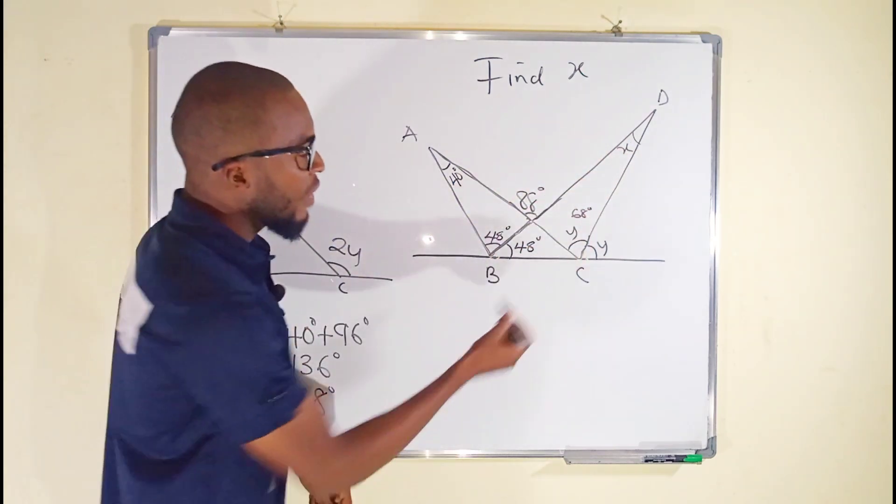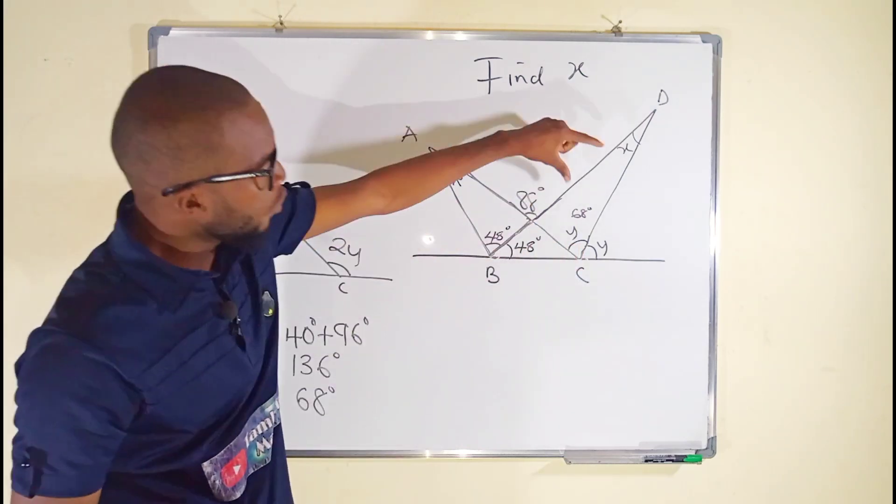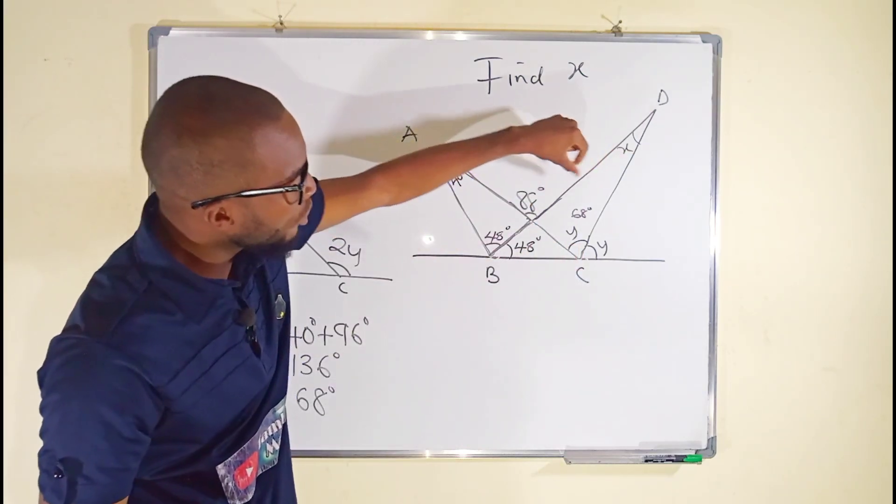But our main target is to find the value of x. And you can see we already have the value of y, so we can add them together and they must equate to 88.